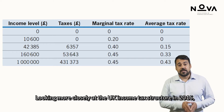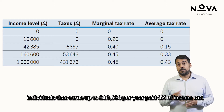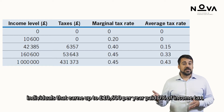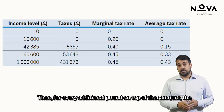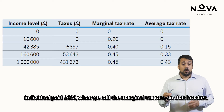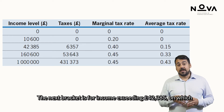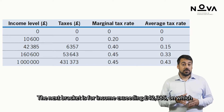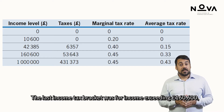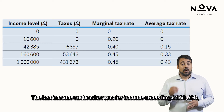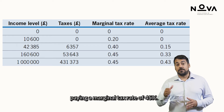Looking more closely at the UK income tax structure in 2015: individuals earning up to £10,600 per year paid 0% income tax. For every additional pound above that, the marginal tax rate was 20%. The next bracket applies to income exceeding £42,385, with a marginal tax rate of 40%. The last bracket, for income exceeding £160,600, carries a marginal tax rate of 45%.